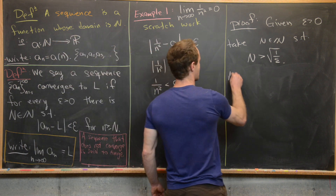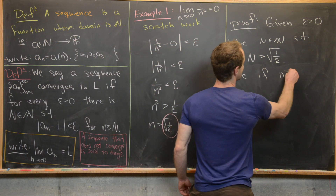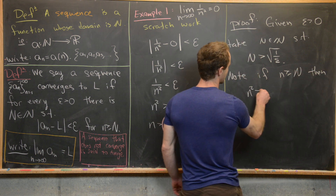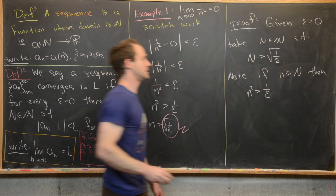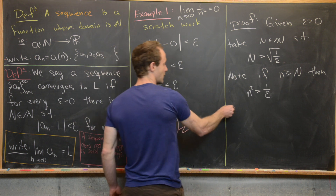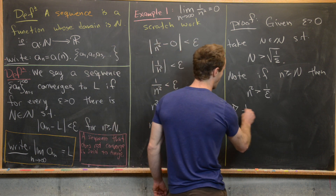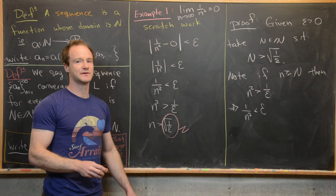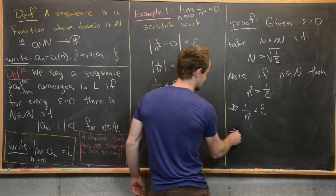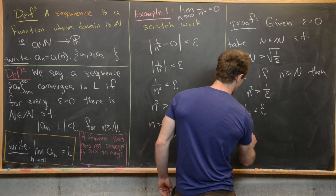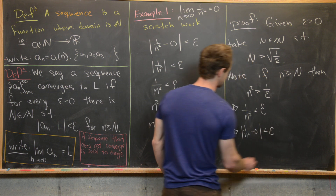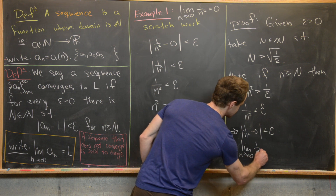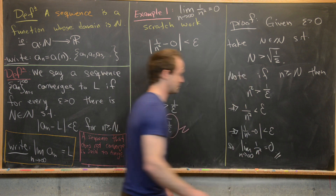Now we work the steps in reverse. If little n is greater than or equal to capital N, then n² is greater than 1/epsilon. Reciprocating both sides tells us 1/n² is less than epsilon. Adding an absolute value and subtracting 0, we get the absolute value of 1/n² minus 0 is less than epsilon. Therefore, the limit as n goes to infinity of 1/n² equals 0.